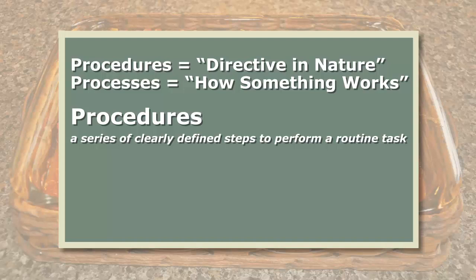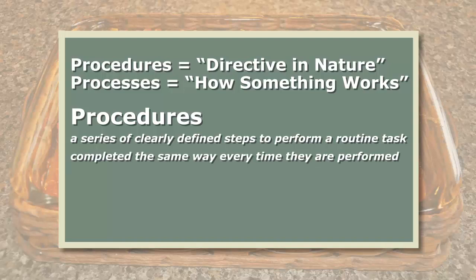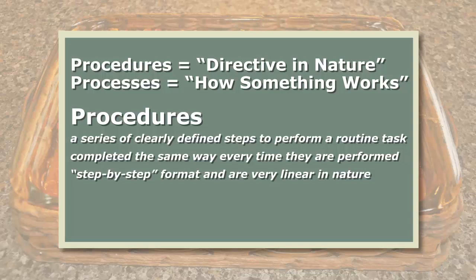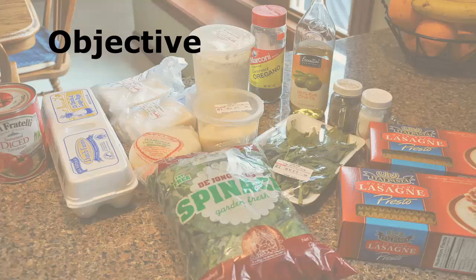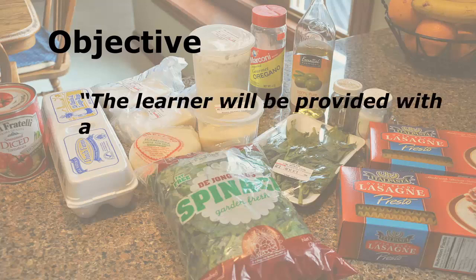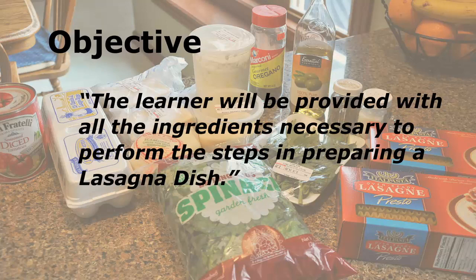Procedures are typically completed more or less the same way every time they are performed. They are usually laid out in a step-by-step format and are very linear in nature. Sometimes procedures have decision points in them where a choice needs to be made, which may lead to another procedure. So when we think of procedures, we can think of two types: linear procedures, which are the same steps each time, and decision procedures, which include multiple linear procedures. When developing instruction to teach procedures, be sure to teach the learner to apply the procedure rather than just remembering the steps.